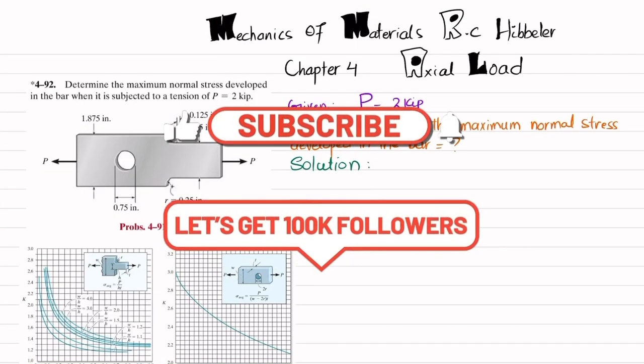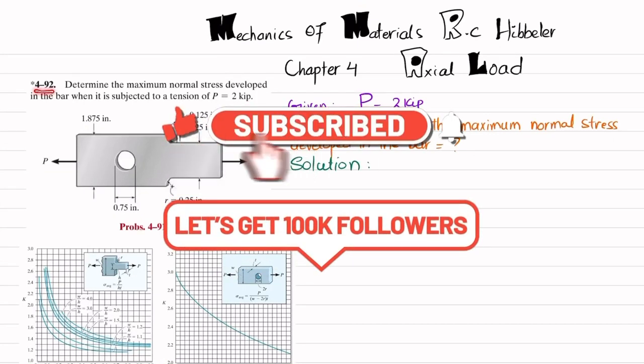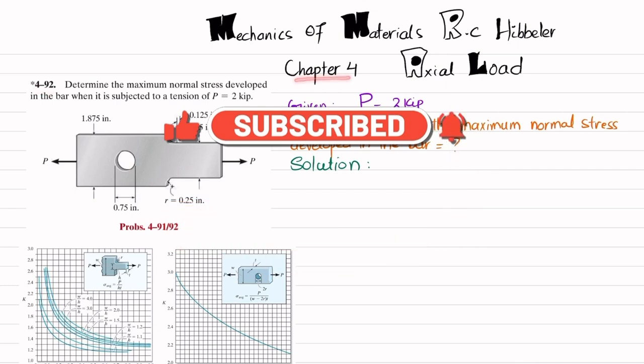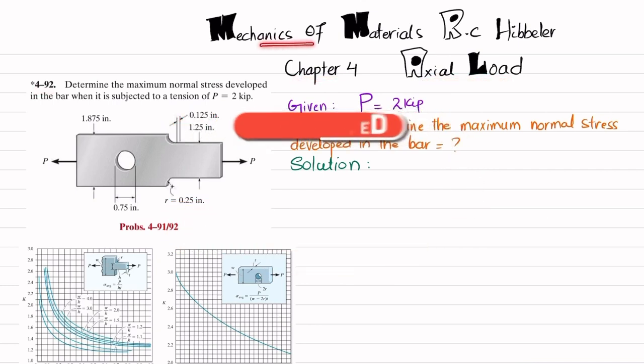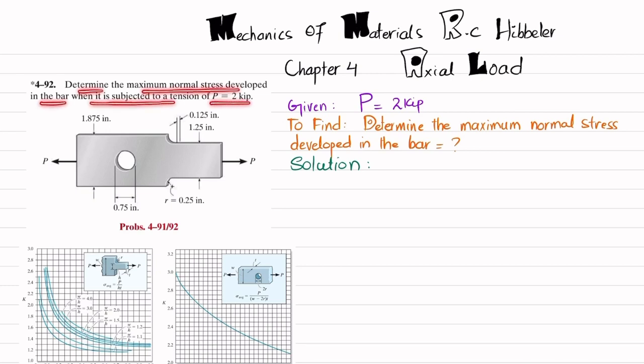Welcome back. In this video we are going to solve problem 4-92, taken from Chapter 4 Axial Load in Mechanics of Materials by R.C. Hibbeler. The statement is: determine the maximum normal stress developed in the bar when it is subjected to a tension of 2 kips.